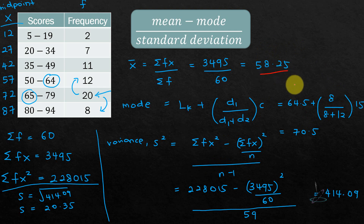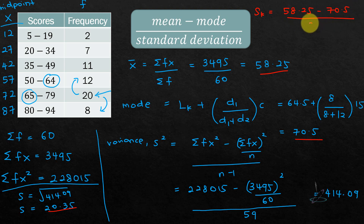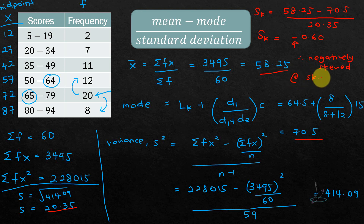With mean = 58.25, mode = 70.5, and standard deviation = 20.35, the Pearson coefficient of skewness is: SK = (58.25 − 70.5) / 20.35 = −0.60. Since the sign is negative, the distribution is negatively skewed, or skewed to the left.